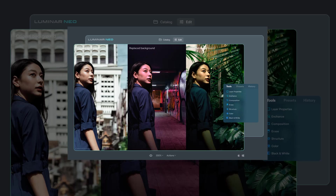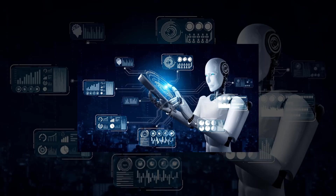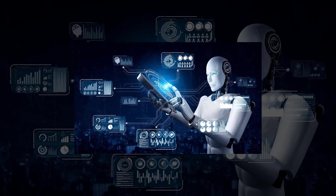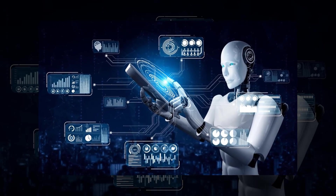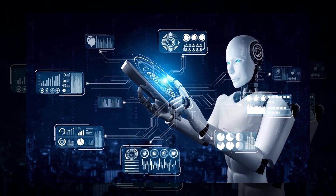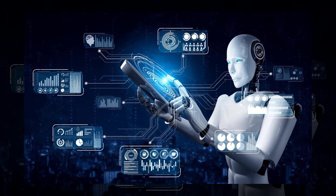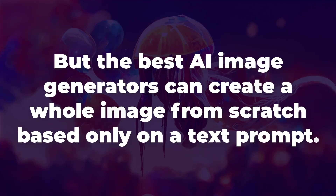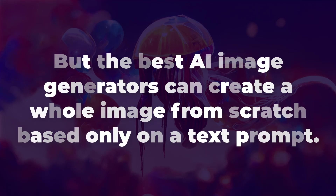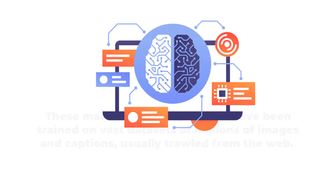AI capabilities already existed in popular photo editing software like Photoshop, Lightroom, and Luminar Neo. It's through machine learning that these tools can detect the sky or subject in an image, remove unwanted objects, or adjust facial features. But the best AI image generators can create a whole image from scratch based only on a text prompt.